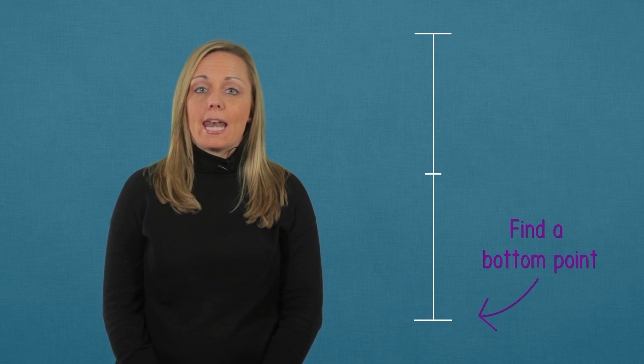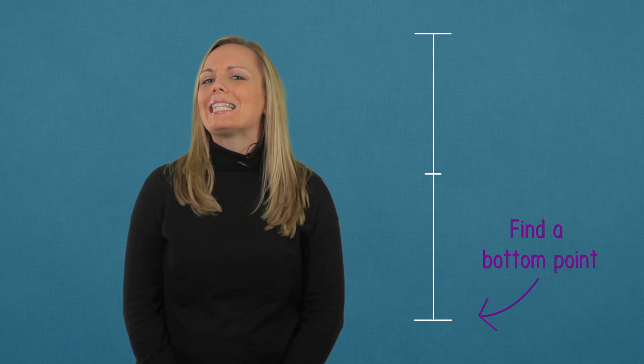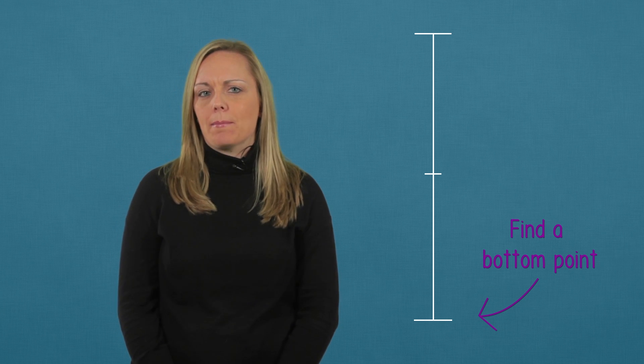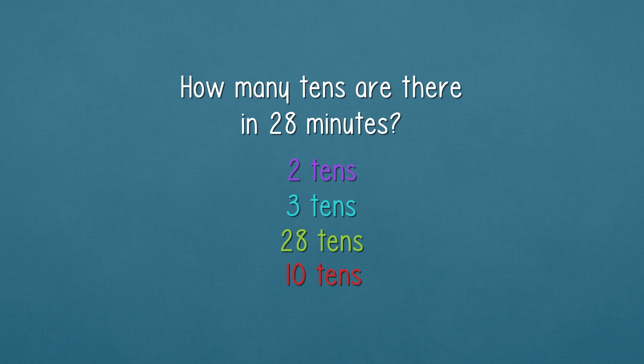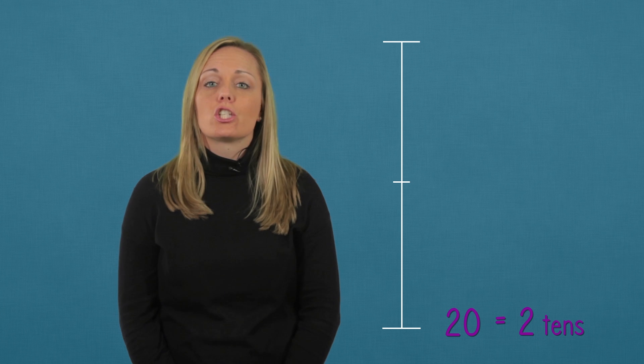Here is a vertical number line. To round to the nearest 10, we need to find a bottom point and a top point. For this bottom point, we want to know how many tens there are in our number. How many tens are there in 28 minutes? We have a 2 in the tens place, so that's two tens. We'll write a 20 here. That's two tens.